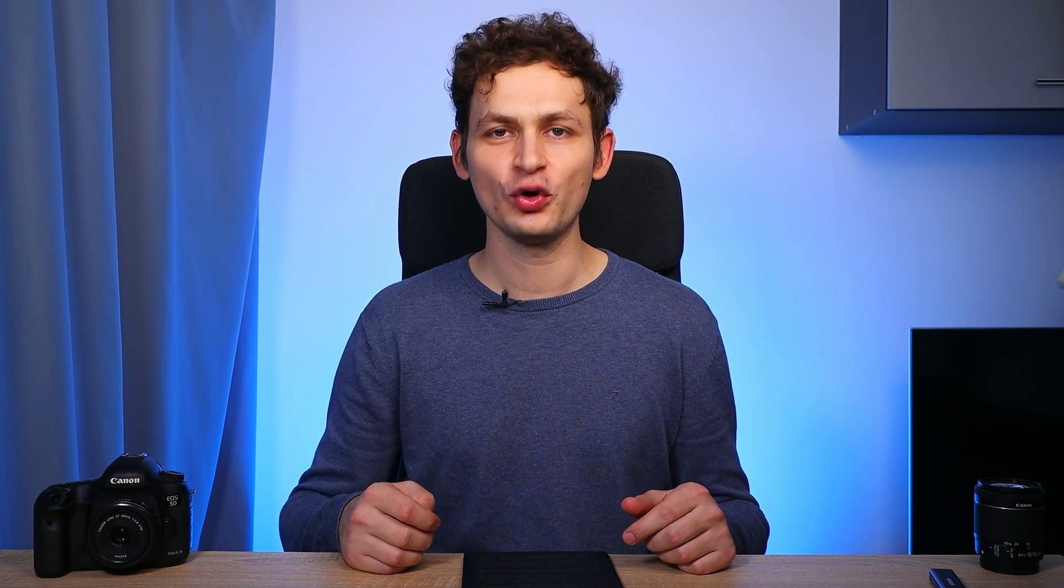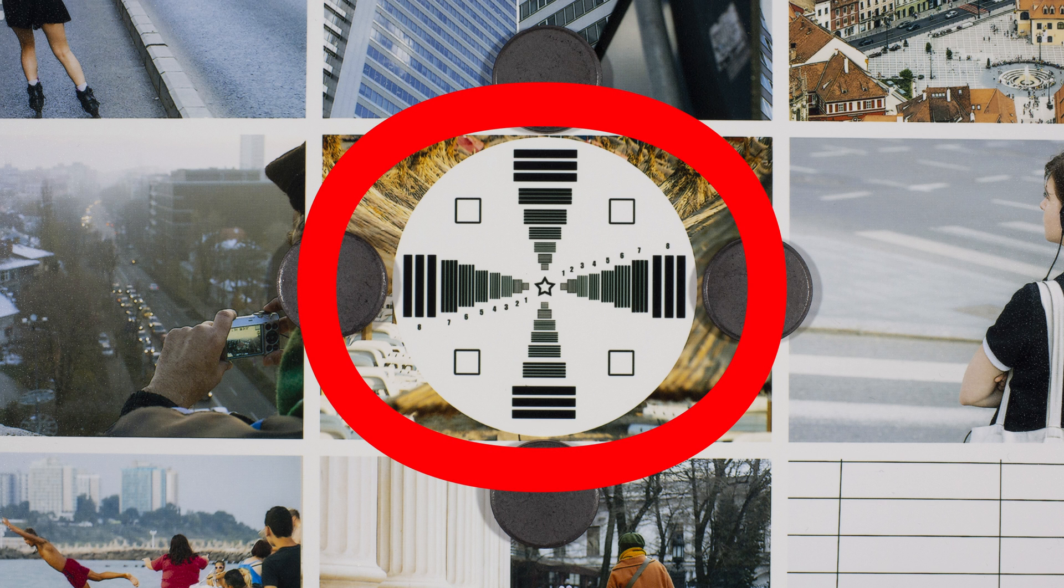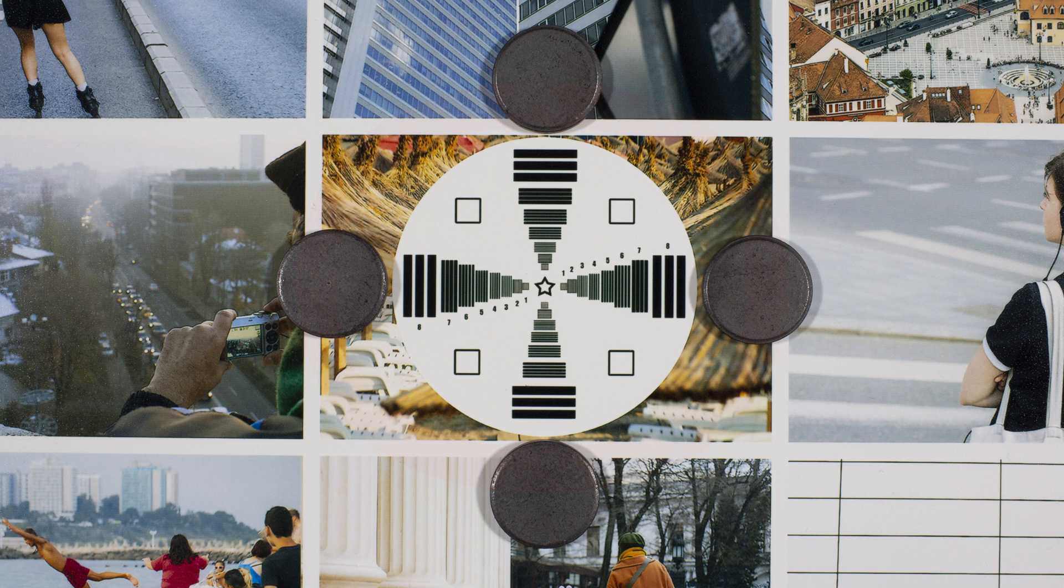Again, the Sigma lens wins. It is sharper in the corner of the image. We will now move to close-up image quality. I will take a photo at the minimum focusing distance for both lenses. The third round starts now.